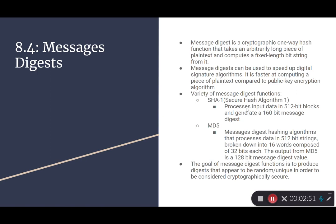For MD5, it is a Message Digest hashing algorithm that processes data in 512-bit strings that is then broken down into 16 words, which is composed of 32 bits each. The output from MD5 is a 128-bit Message Digest value. The goal of Message Digest function is to produce digests that appear to be random or unique in order to be considered cryptographically secure.